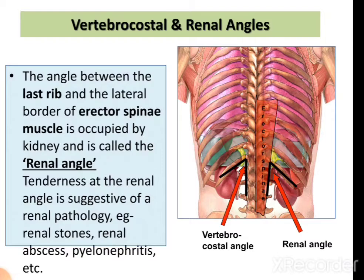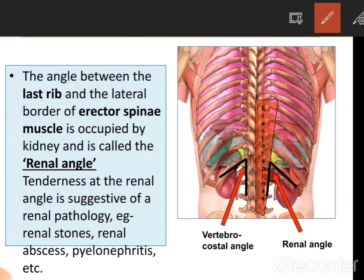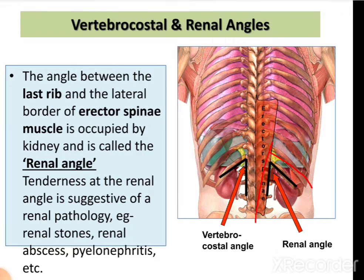The vertebrocostal or renal angle is the angle between the last rib — the 12th rib — and the lateral border of the erector spinae muscle. This renal angle has clinical importance: tenderness at the renal angle is suggestive of renal pathology, such as renal stones, renal abscess, or pyelonephritis.